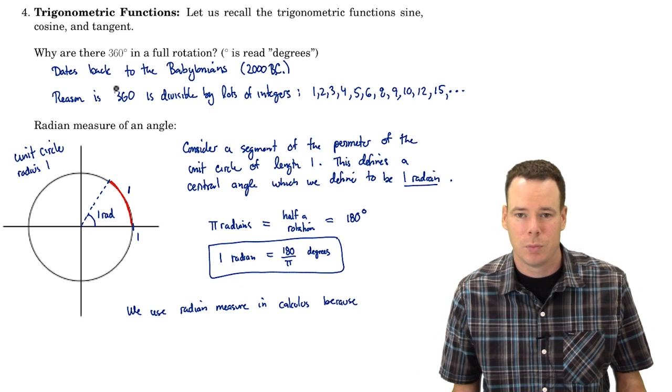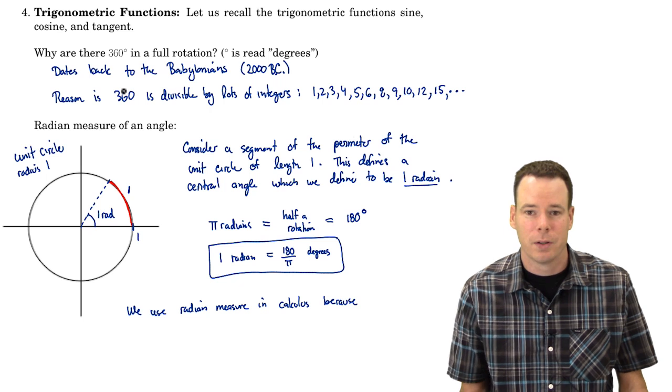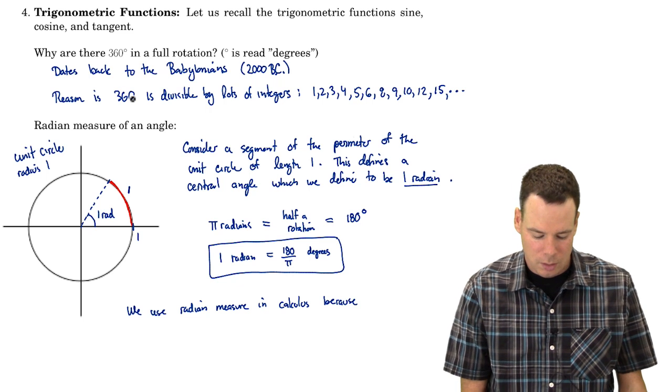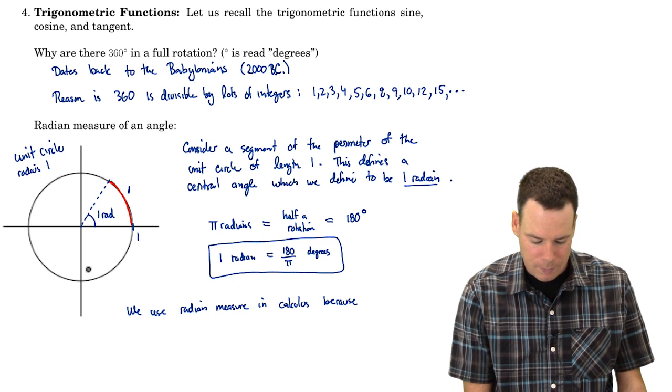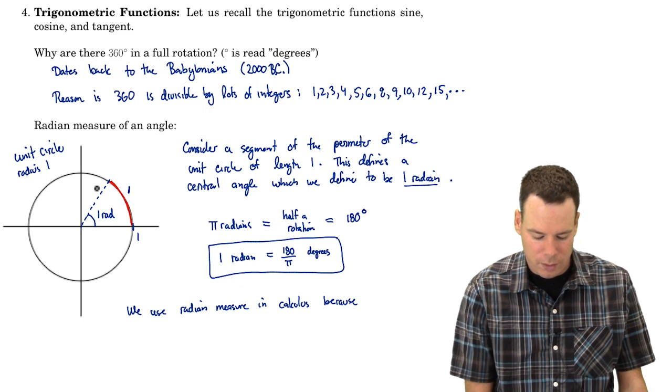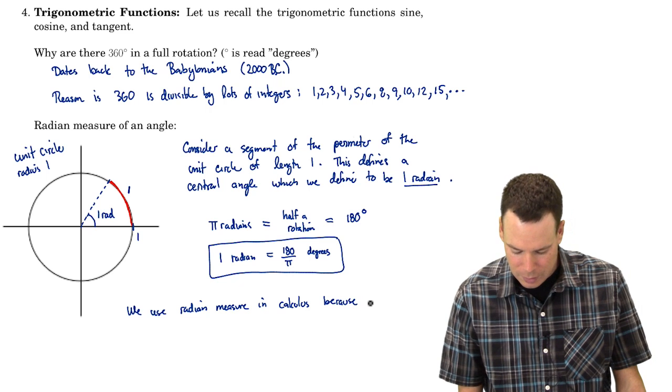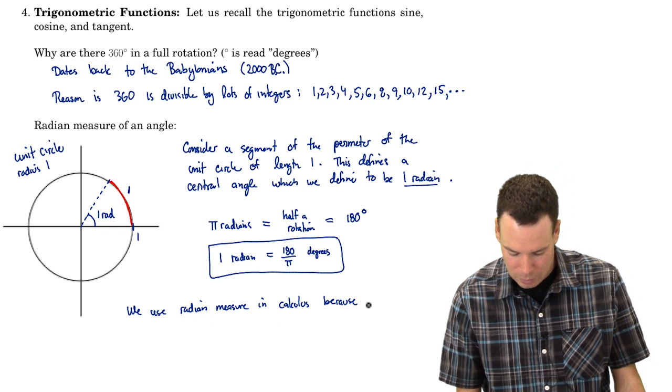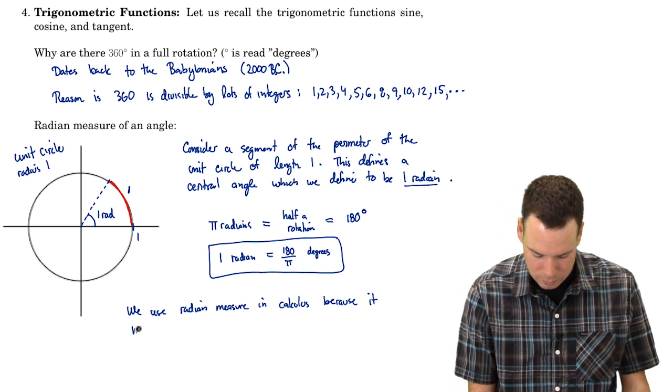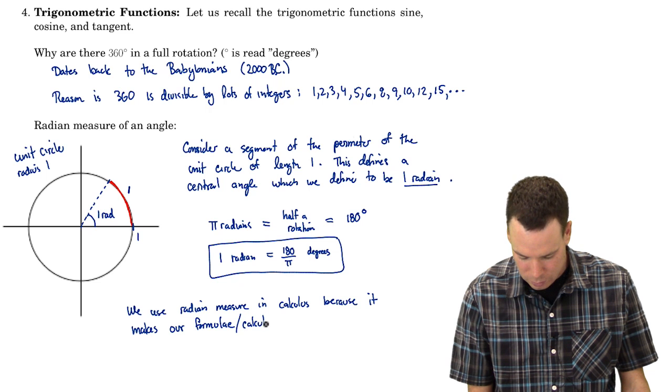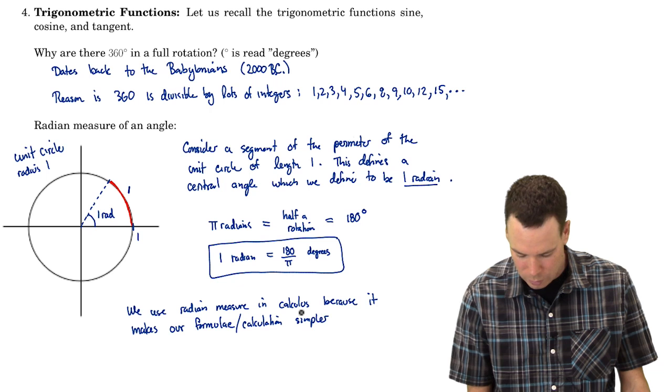We could have chosen 720. That's divisible by a lot more integers. In fact, it's divisible by another factor of 2. But the problem is that number is getting big. So 360 is in some sense an arbitrary value. This radian measure is chosen in a very natural way. It's chosen by this natural length 1 and the relationship it has with the circle. So because radian measure is natural and more to the point it makes our formulas simpler. We use radian measure in calculus because it makes our formulas and in fact our calculations simpler.